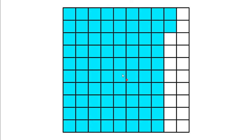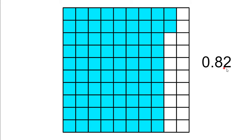And this one, there are 82 parts shaded in out of the hundred. So it needs to say 82 hundredths. And there needs to be two digits after that decimal point. So it says zero and 82 hundredths.